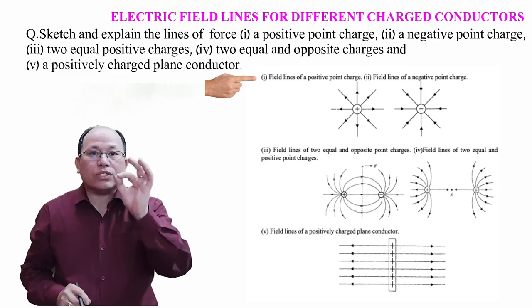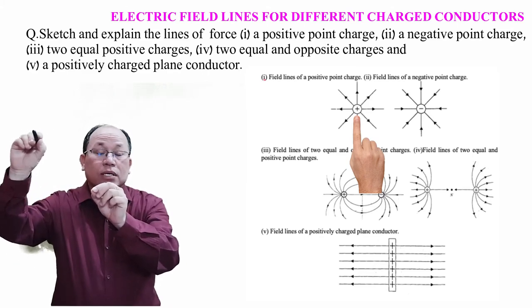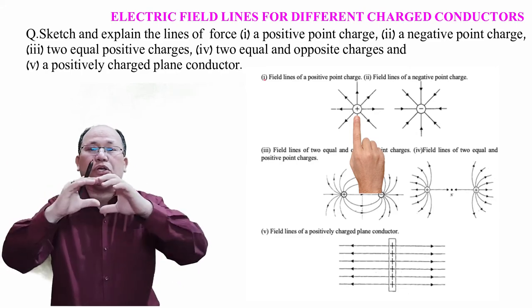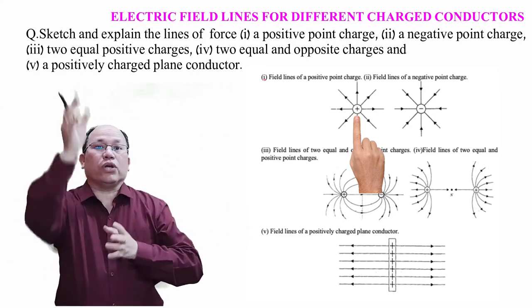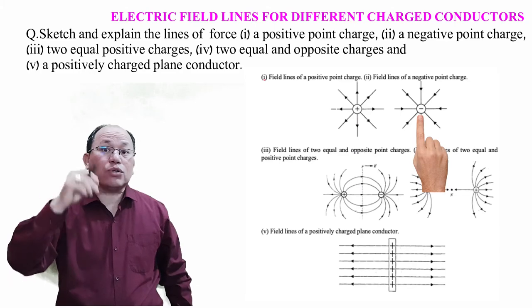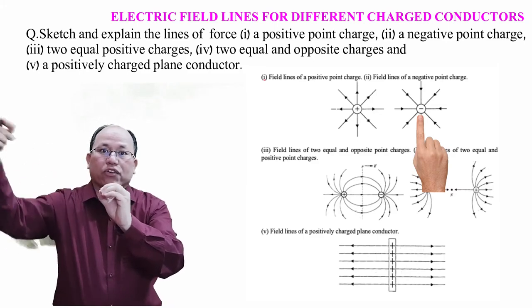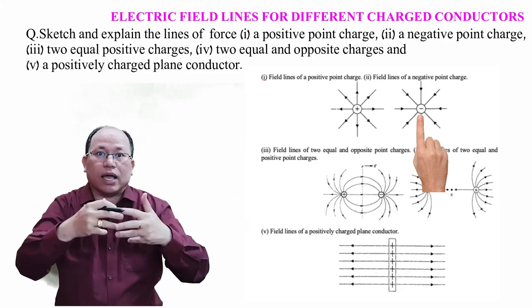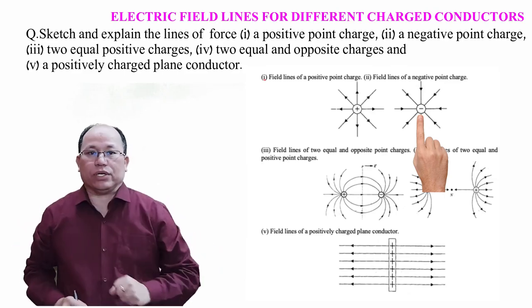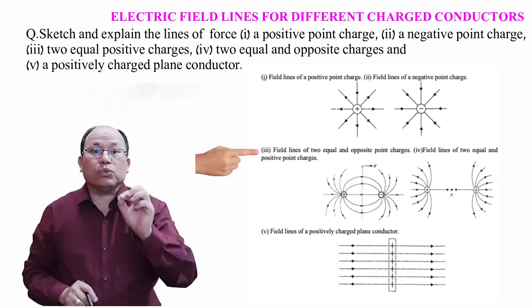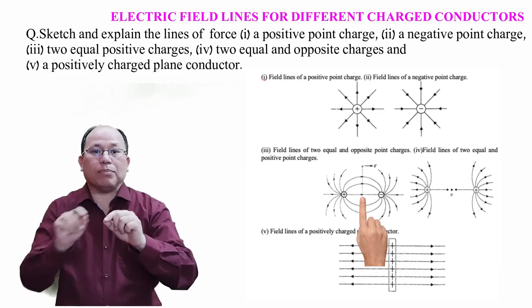Field lines of a positive point charge: if you place a unit positive test charge near plus q, they repel, so field lines go outward in all directions — the field is spherically symmetric and radially outward. For a negative point charge: the unit positive charge is attracted, so field lines are radially inward, also spherically symmetric.